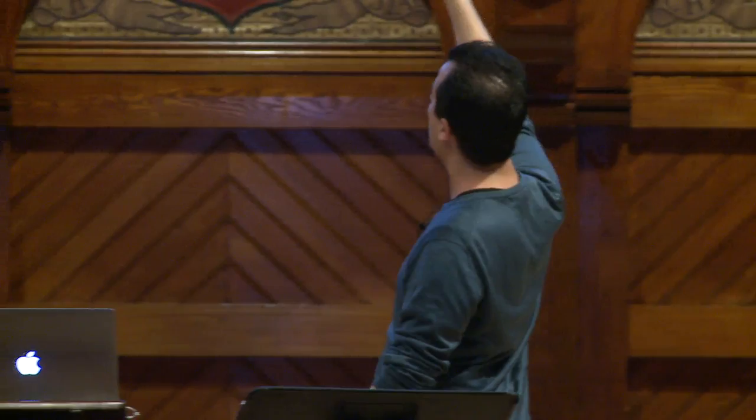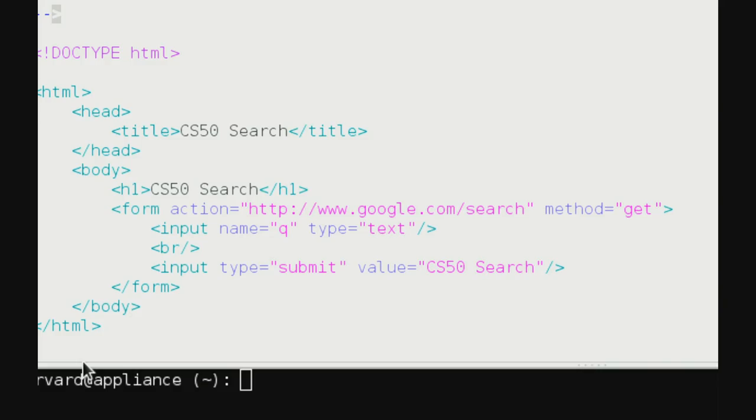What was the meaning of an action attribute on the HTML form tag? Action is the destination to where the form is going to be submitted. The fact that it says action equals 'google.com/search' means that when the user clicks the submit button, whatever form fields they've filled out are sent to that specific URL at Google. The method used is called GET, which is just a technique for passing information along to a web server by way of the URL.